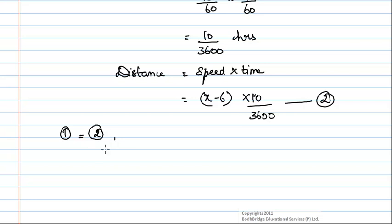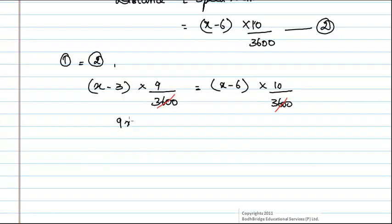We will get x minus 3 into 9 by 3600 is equal to x minus 6 into 10 by 3600. On simplifying this, we will get 9x minus 27 equals 10x minus 60. Therefore, x is equal to 60 minus 27, which is equal to 33 km per hour.